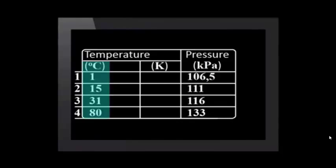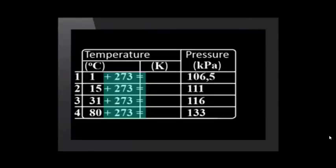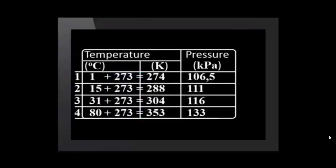But now let's convert our temperature values into the unit Kelvin. This is the equation for the conversion from Celsius to Kelvin. So, we add 273 in each case. Now let's check for direct proportion between temperature in Kelvin and pressure.